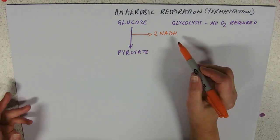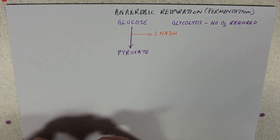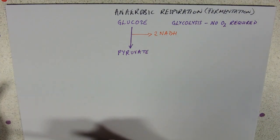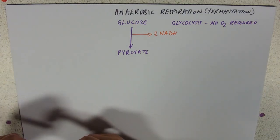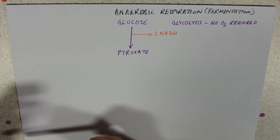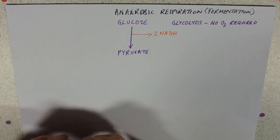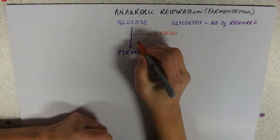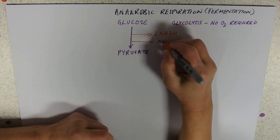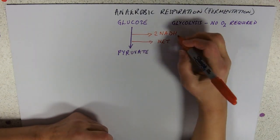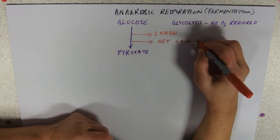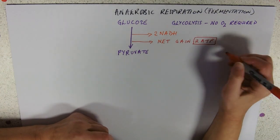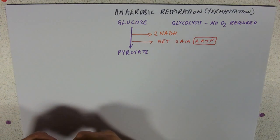If there is no oxygen available, then that obviously can't happen, because oxygen is the terminal electron acceptor in the electron transport chain. Without the oxygen there to accept the protons and electrons at the end, that can't happen. Also remember that overall, despite the fact that you've put two ATP in at the beginning, you've got a net gain of two ATP at the end of glycolysis, so you are still releasing some usable energy.